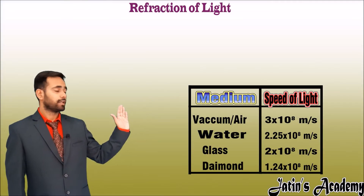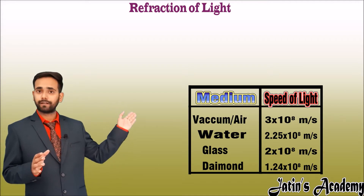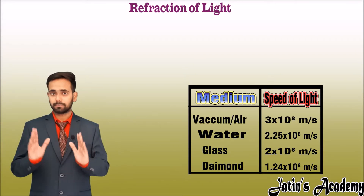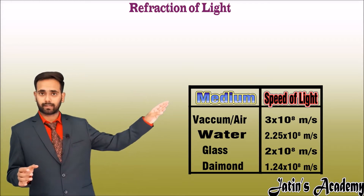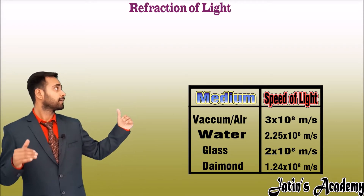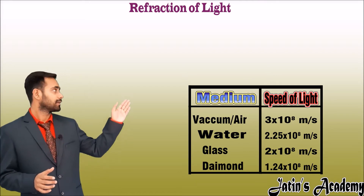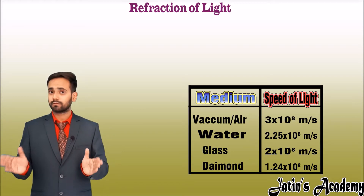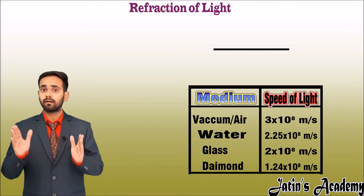This is the table in which it is written that the speed of light in different mediums. We have to remember only the speed of light in vacuum, that is 3 × 10⁸ m/s. Observe the other speeds — you can see that when the optical density of the medium increases, the light speed decreases. So we have to introduce a new term, which is a ratio of the speeds of light in two mediums.